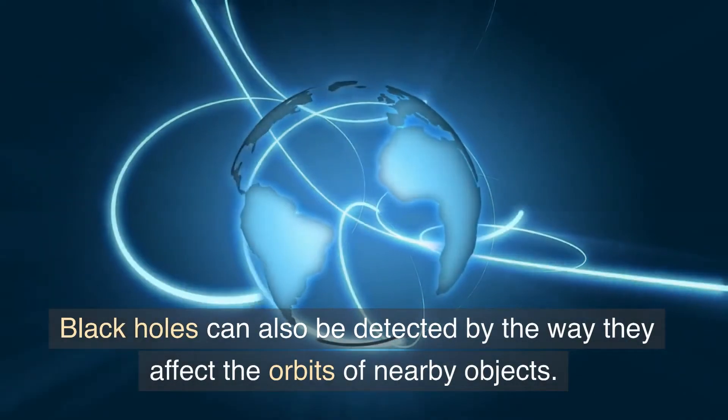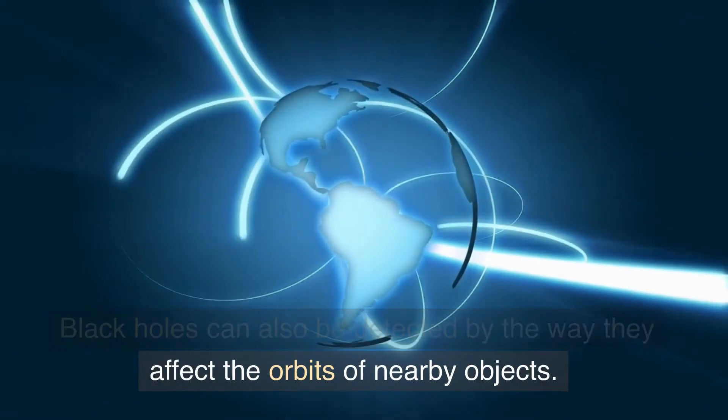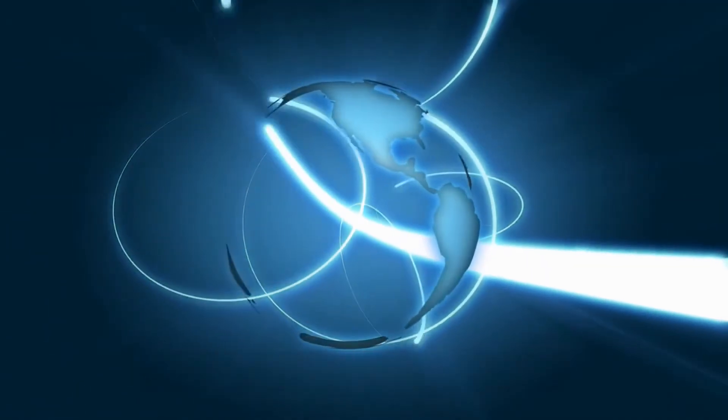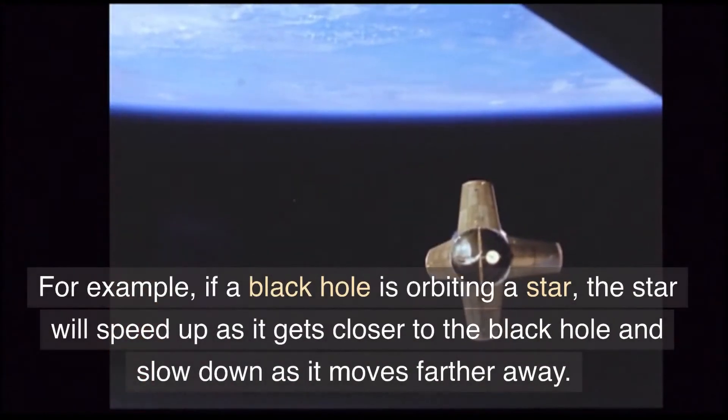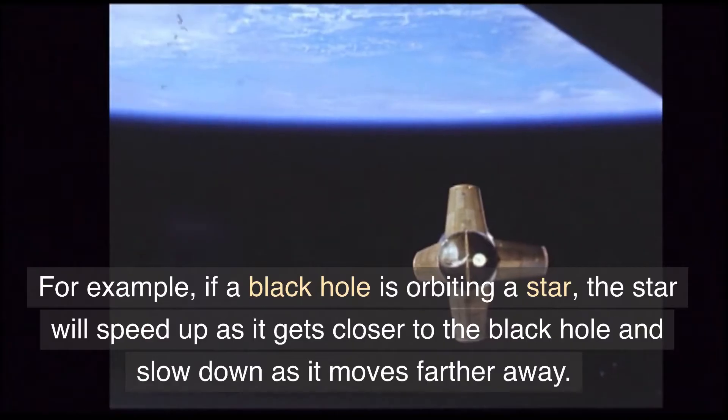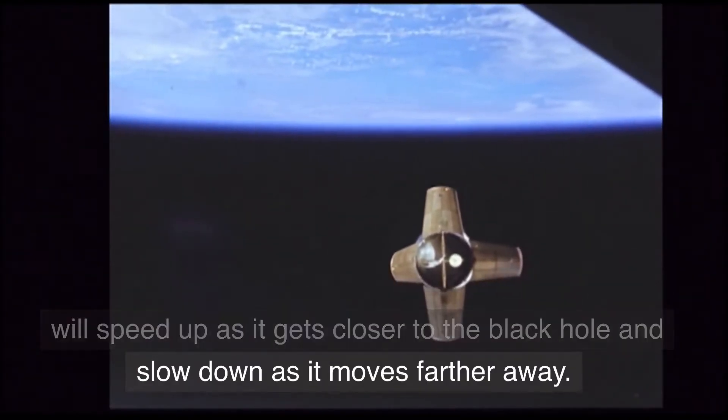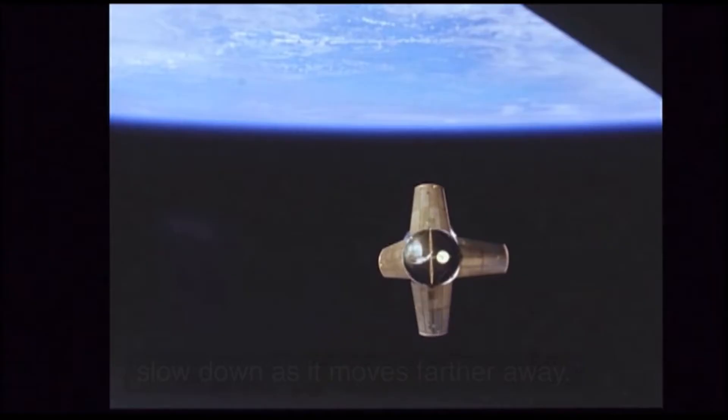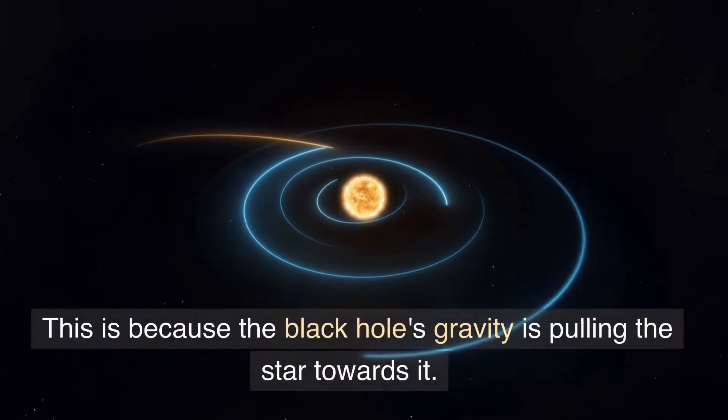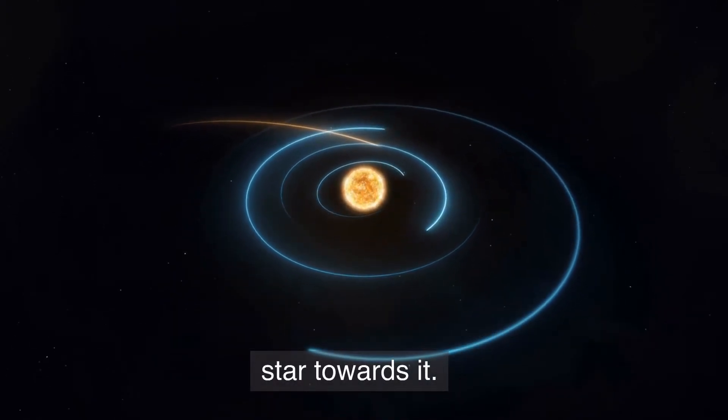Black holes can also be detected by the way they affect the orbits of nearby objects. For example, if a black hole is orbiting a star, the star will speed up as it gets closer to the black hole and slow down as it moves farther away. This is because the black hole's gravity is pulling the star towards it.